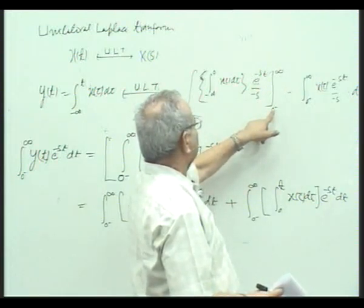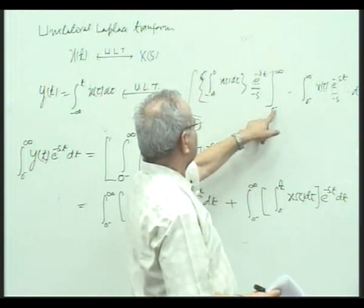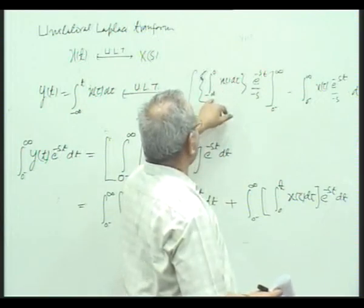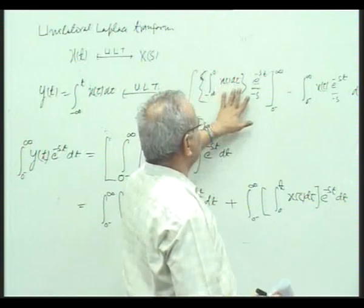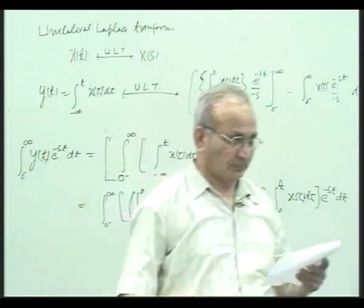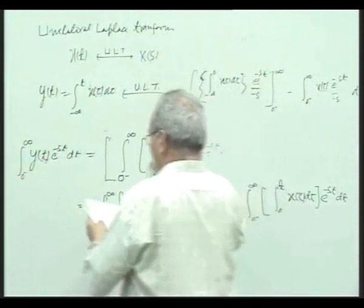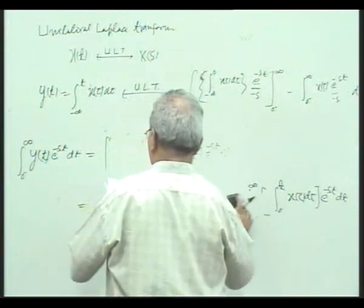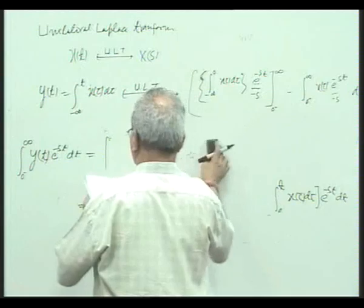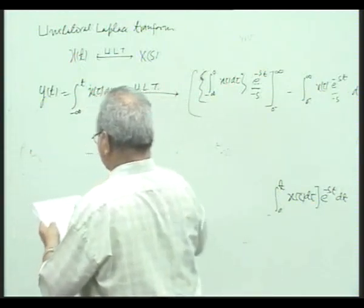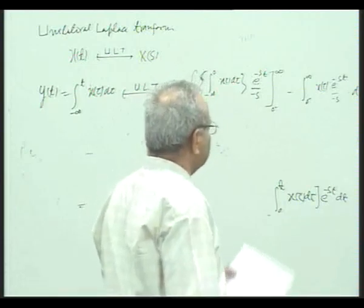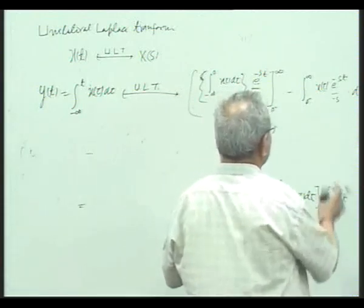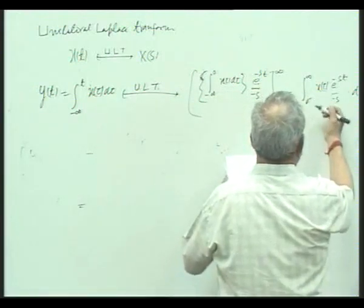And when it is evaluated at zero minus, t becomes zero minus. So, zero minus zero — this integral becomes again zero. Now, let us consider this. We have to further see what this integral is. This is to be evaluated at zero.